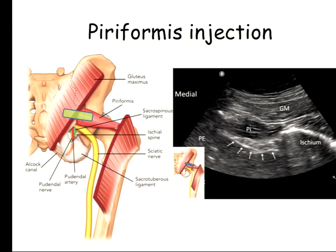The sciatic nerve does not have a neurovascular bundle side by side. The inferior gluteal artery is on the more medial side and just sends a branch there. When you scan, a lot of times you can see the artery here or there because it's actually crossing the sciatic nerve — so it's not like a parallel neurovascular bundle that you see for other structures. You don't want to create a hematoma there, so you need to see all these structures.